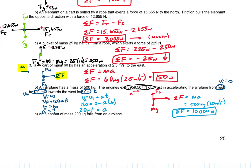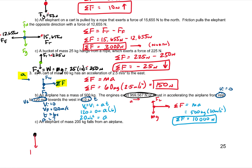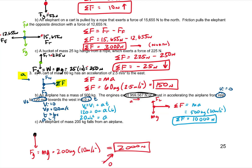An elephant with a mass of 200 kilograms falls from an airplane. The only force acting on it is weight: mg equals 200 kilograms times 10 meters per second squared, which is 2,000 newtons. So the net force is 2,000 newtons. In summary, we practiced finding net force two ways: by adding all forces together, and by finding acceleration and multiplying by mass.